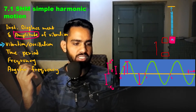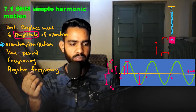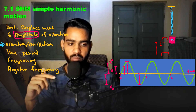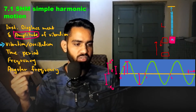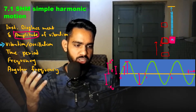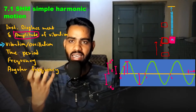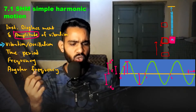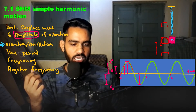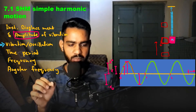A complete vibration means the object starts from the mean position, moves to the positive extreme, returns through the mean position to the negative extreme, and comes back to the mean position again. On the graph, a complete cycle or complete vibration is from one point back to the exact same state — same position and same direction of motion.